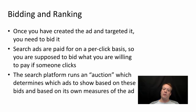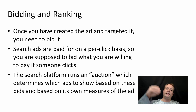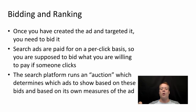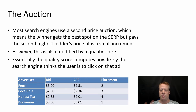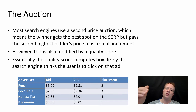Once you've created an ad and targeted it, you need to bid. Search ads are paid for on a per-click basis, so you bid what you are willing to pay if someone clicks. The search platform will then run an auction based upon those bids to determine which ads show up, based on both the bids and its own measures of the ads.